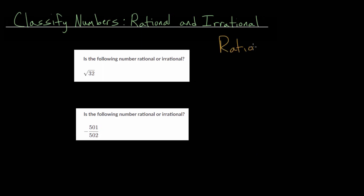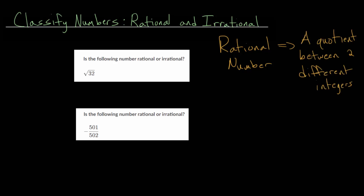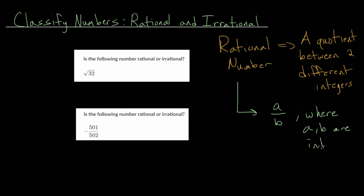A rational number, we can think of this as a ratio of two different integers. So, a rational number is a fraction or a quotient between two different integers. Remember, an integer is just a whole number, including zero and the negative numbers. More generally, we can write a rational number as a fraction a over b, where a and b are integers. One way to remember what these numbers are is to think of them as fraction numbers.